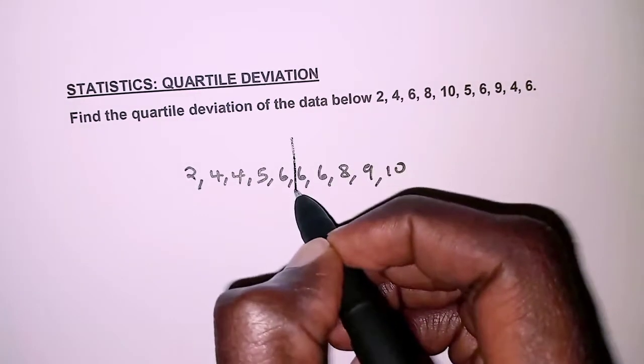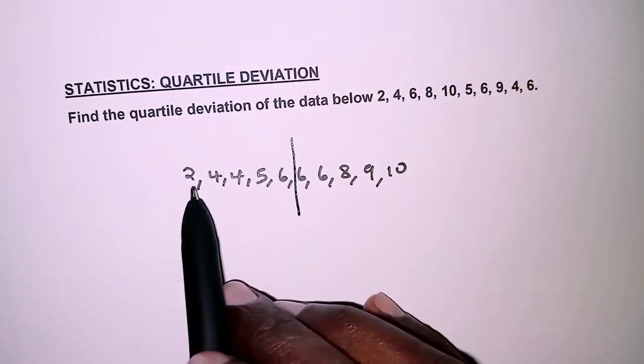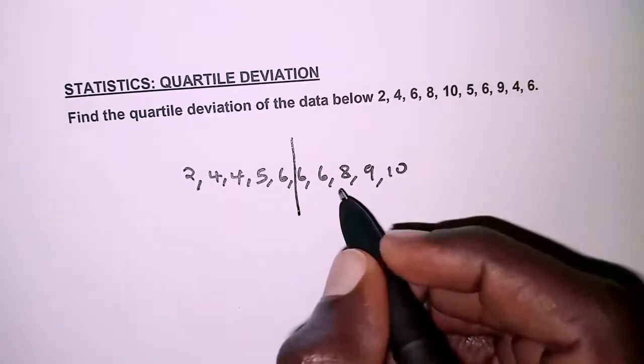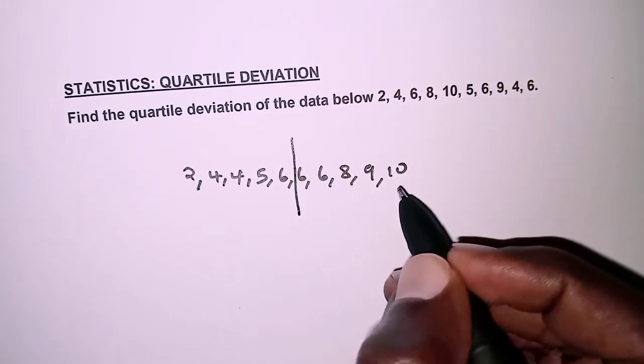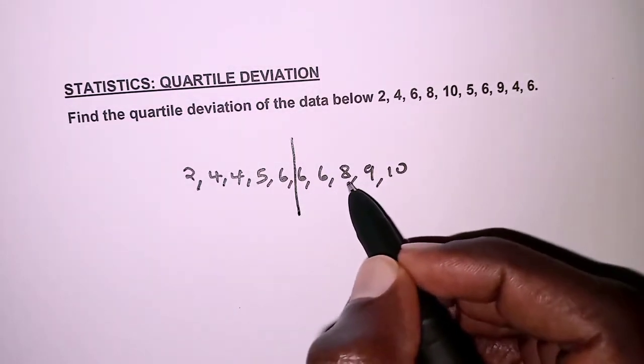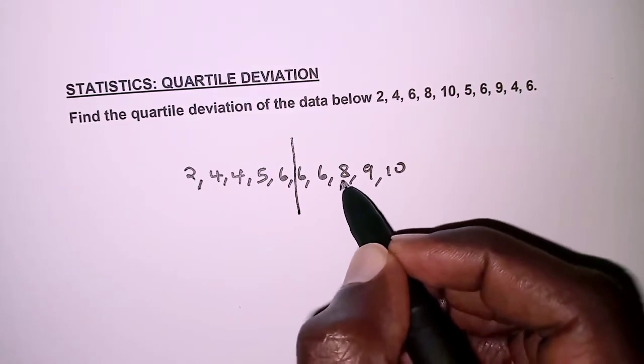Because there are 10, we have the lower half and the upper half. The median of the upper half should give us the upper quartile. So we have 8 being the median, so it's in the middle.